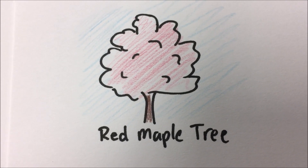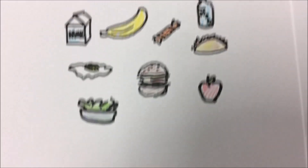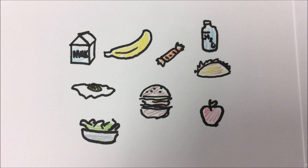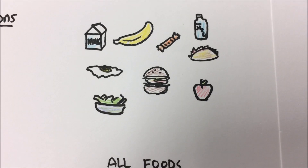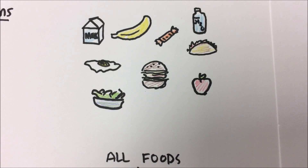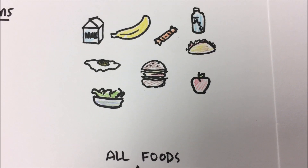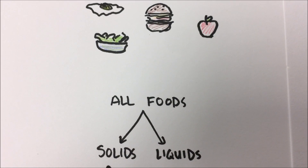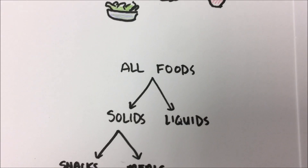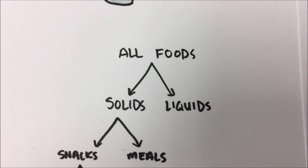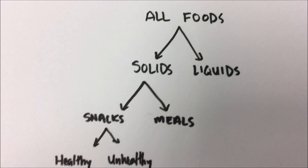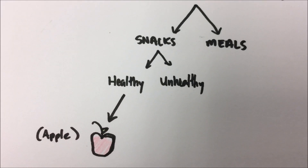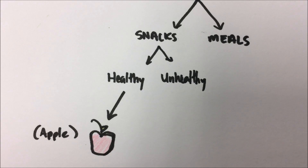Say we have a group of food objects: milk, bananas, candy, tacos. If we were to sort those, we'd look at similarities. We know they are all foods, but we start classifying by asking what some have in common that others do not. Maybe some are solids and others are liquids, and then we branch off from there. Maybe the solids can be classified as snacks or meals; maybe those snacks can be classified as healthy and unhealthy. We can get all the way down until we have a specific food — in this case, our apple. We do the exact same thing with all living things.